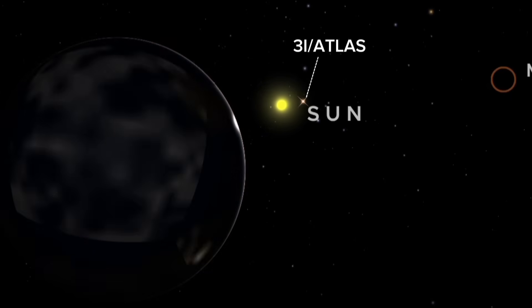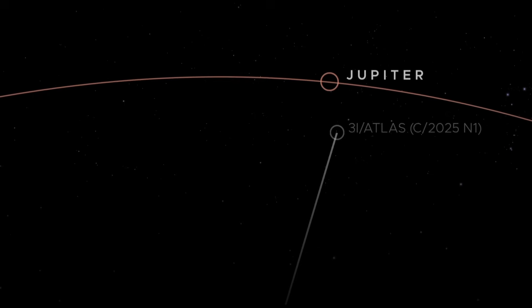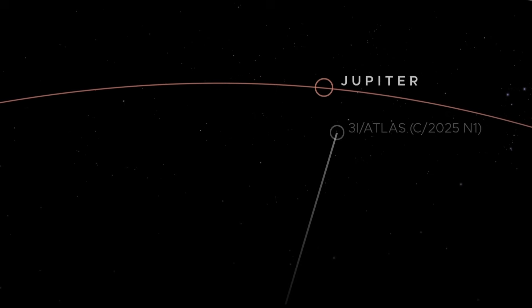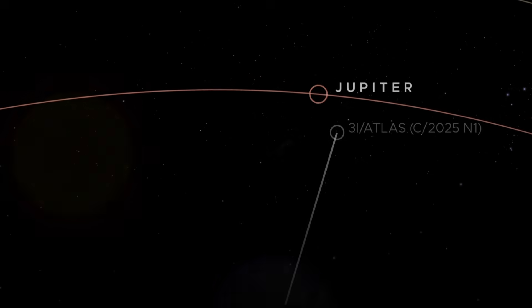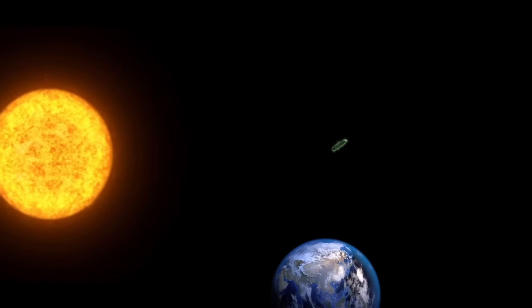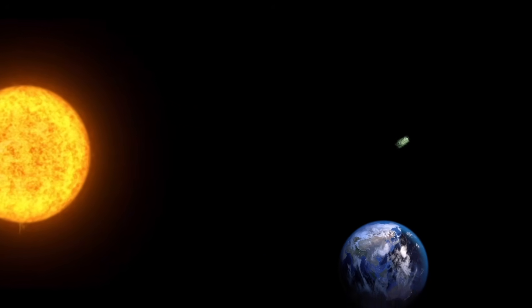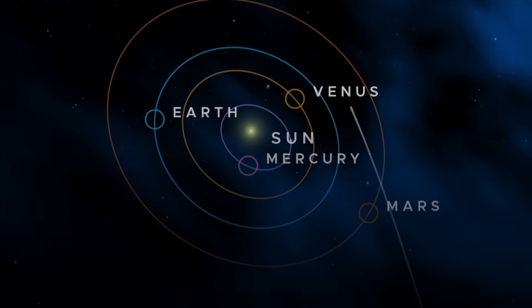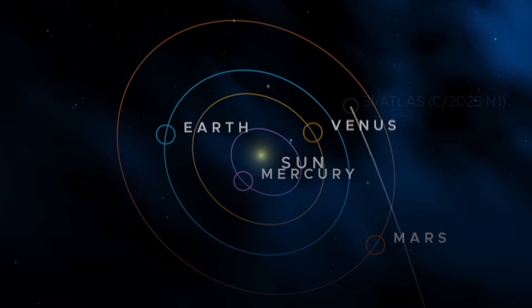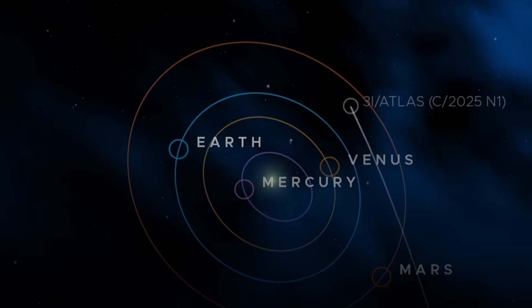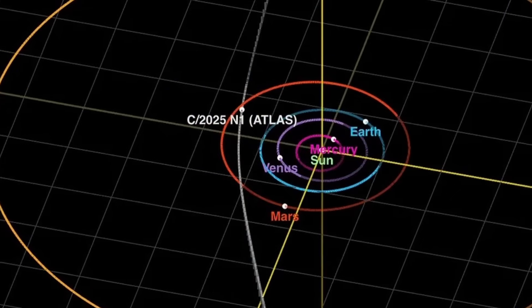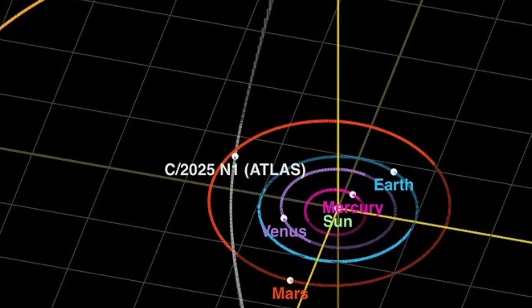We are now on the verge of witnessing one of the most extreme and unexpected mysteries of the interstellar object 3i Atlas, an anomaly that has truly stunned scientists. Until recently, NASA explained that 3i Atlas was nothing more than a normal comet drifting through space. But new calculations have started to challenge that claim.